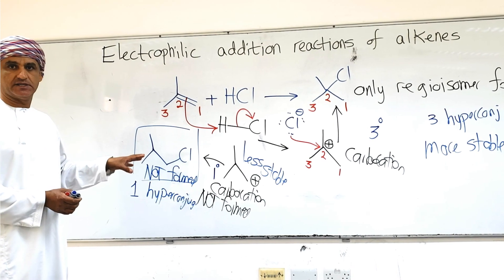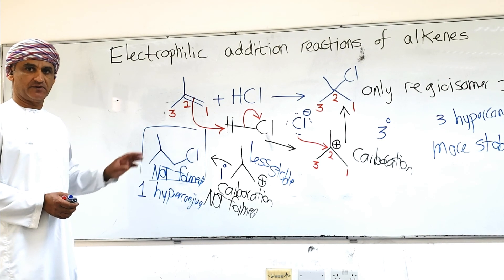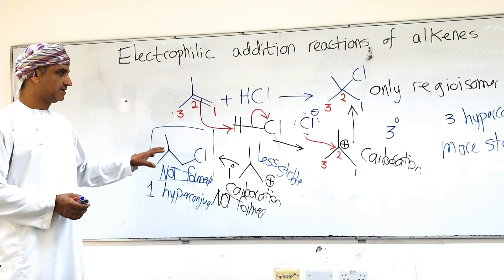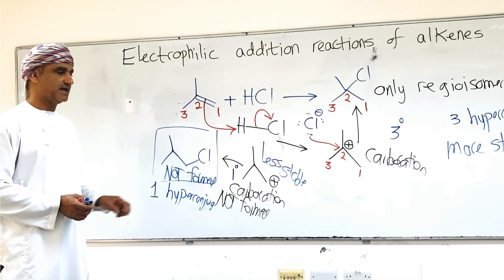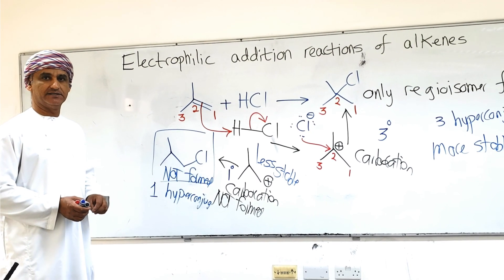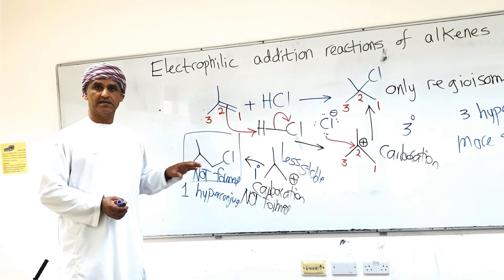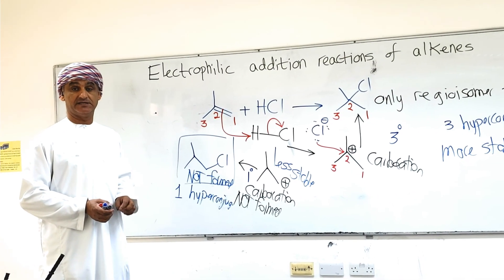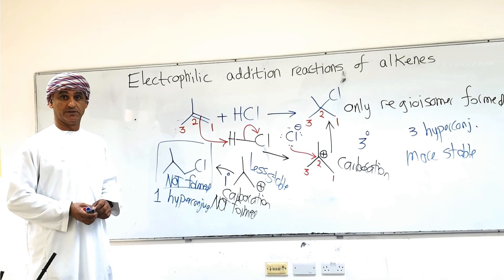To conclude, tertiary carbocations are more stable than primary carbocations, and the reason is hyperconjugation. This again confirms the observation made by Markovnikov, or Markovnikov's rule.